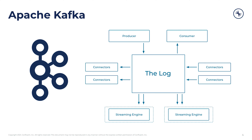Apache Kafka is an event streaming platform. It's distributed, so it's scalable and elastic, and it's fault tolerant. The fault tolerance property is gained by nature of being distributed and by replicating the data across the storage nodes. The storage nodes in Kafka are called brokers.